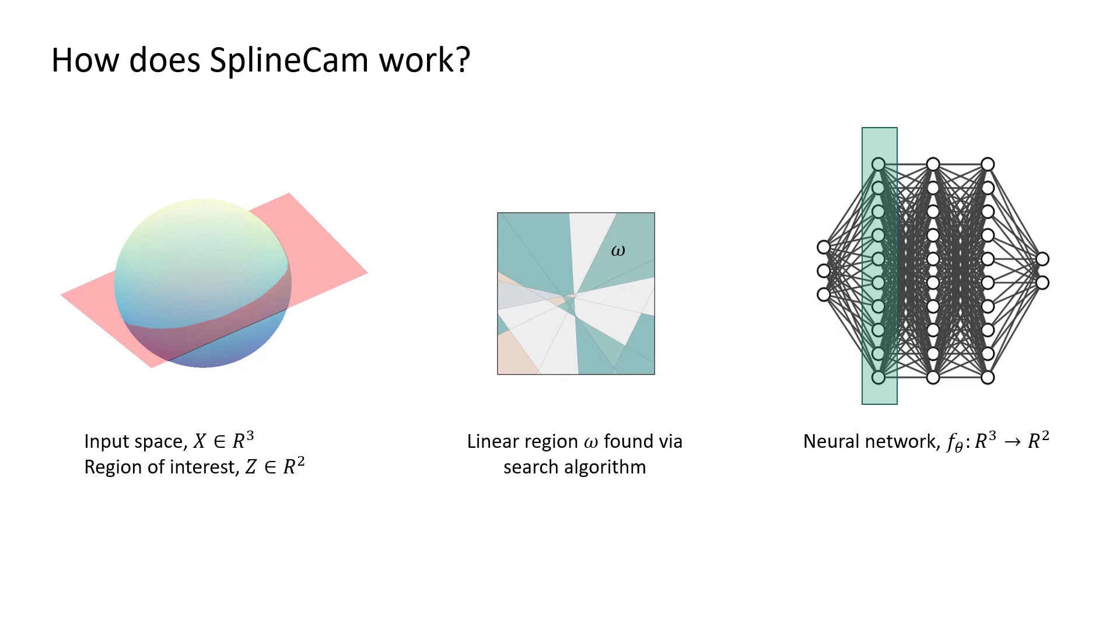Next, we use a novel graph search algorithm to find the faces or cycles of the computed graph. Each of these cycles are the linear regions of the partition formed by the first layer of our network.